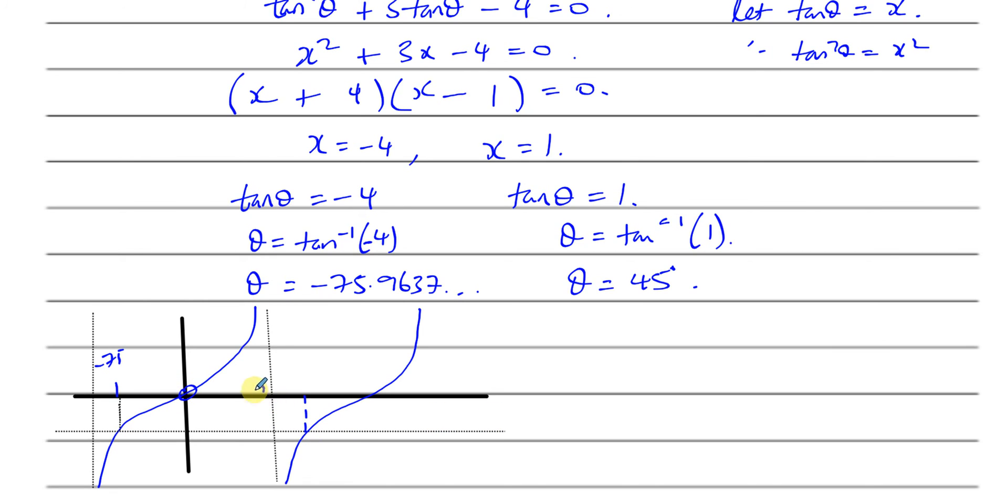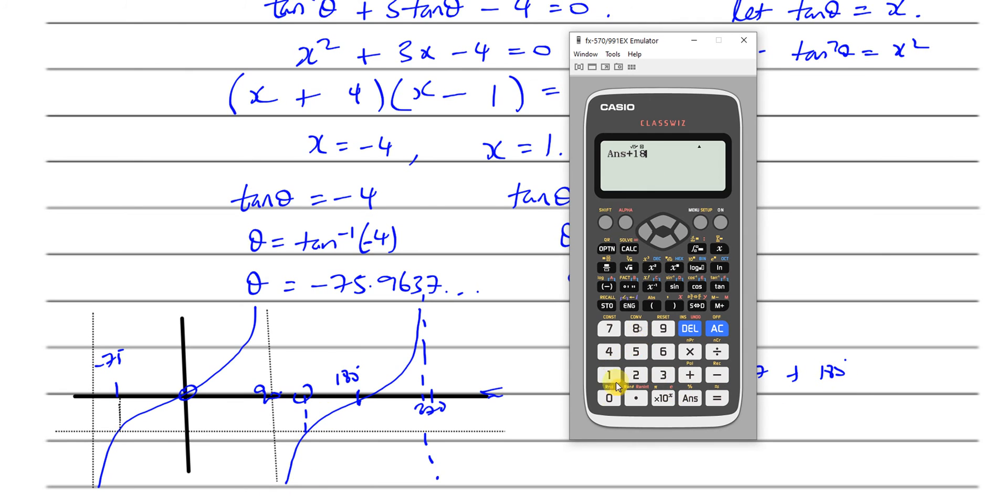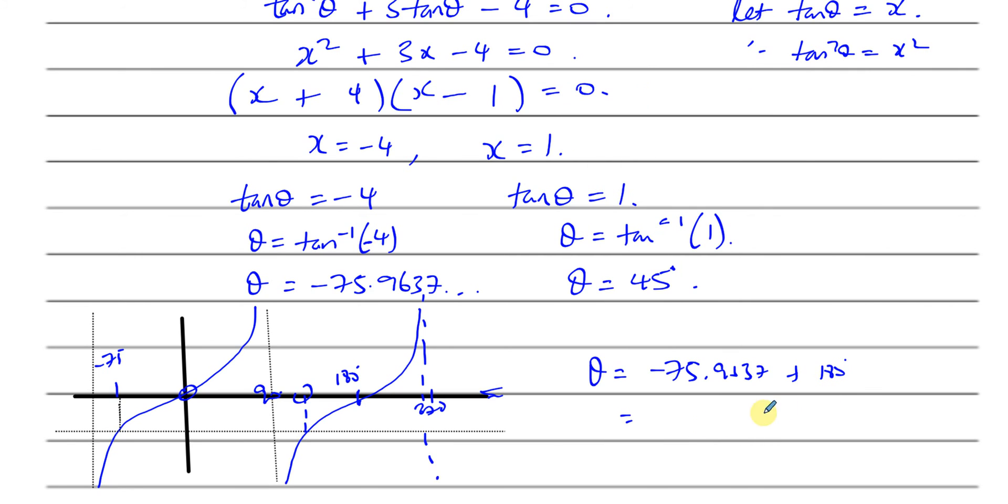So here we have 0. Here we have 90. Here we have 180. And here we have, this is going to be 270, the next place we have an asymptote. Repeats every 180 degrees. So basically, this angle here is 180 more than this angle. So if I take this angle here, if I say the angle I want is minus 75.9637 plus 180 degrees, I'll get the other angle. So I'll take my angle here and I'll add 180 to it. And that gives me 104.0362, 104.0362, which gives you 104.0 degrees to one decimal place.